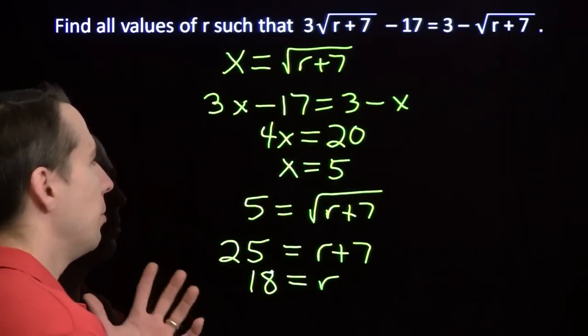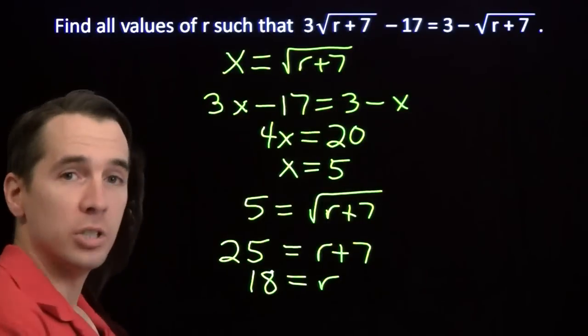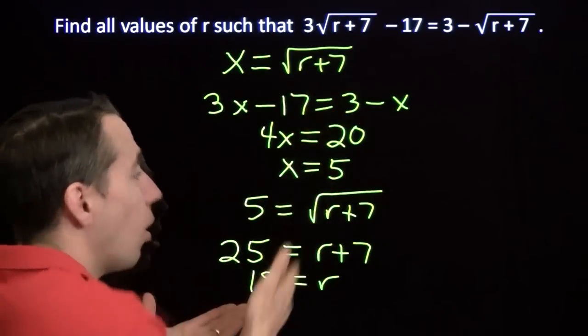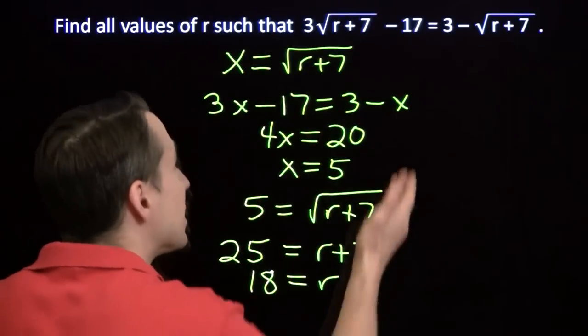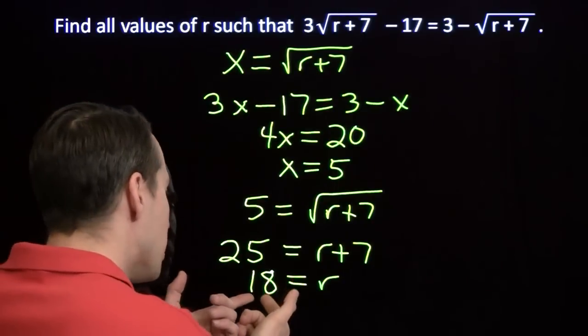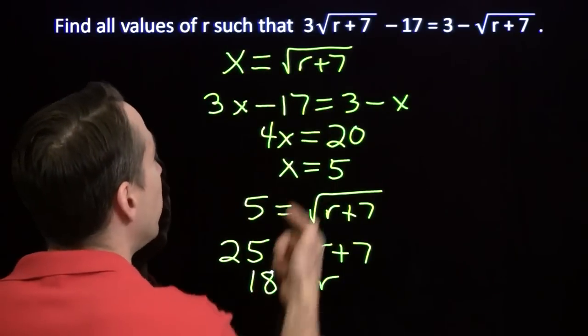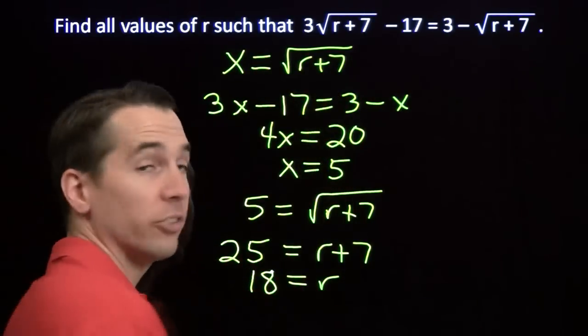Now, maybe that seemed a little shady to you. We should test it. We can always check our work on equations by sticking the numbers back into the equation. So let's see what happens here. We have r equals 18. We put that in here. We have 18 plus 7 is 25.